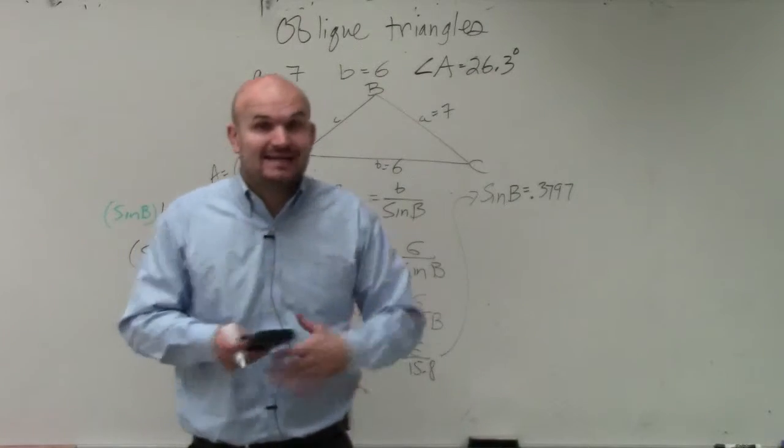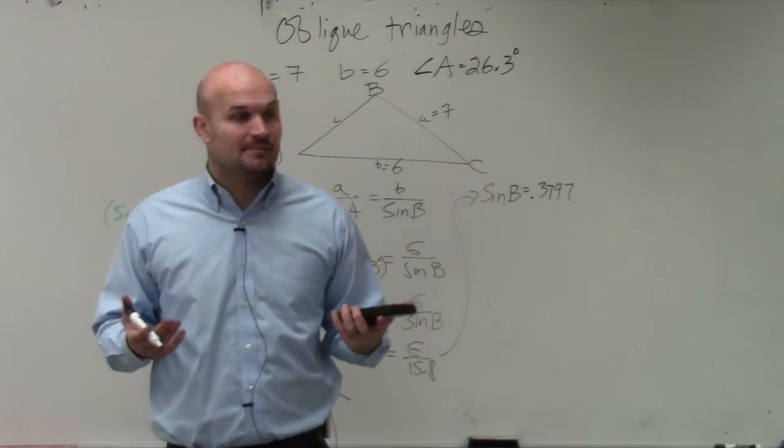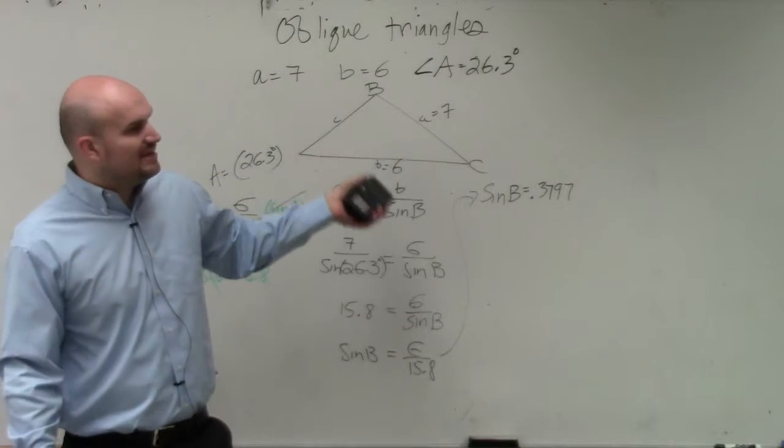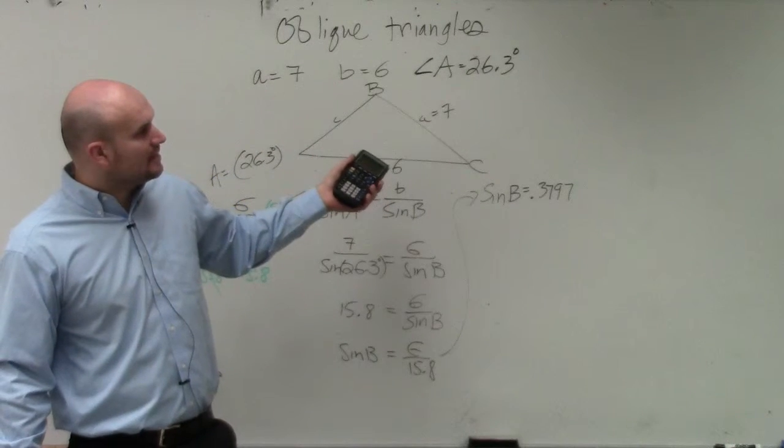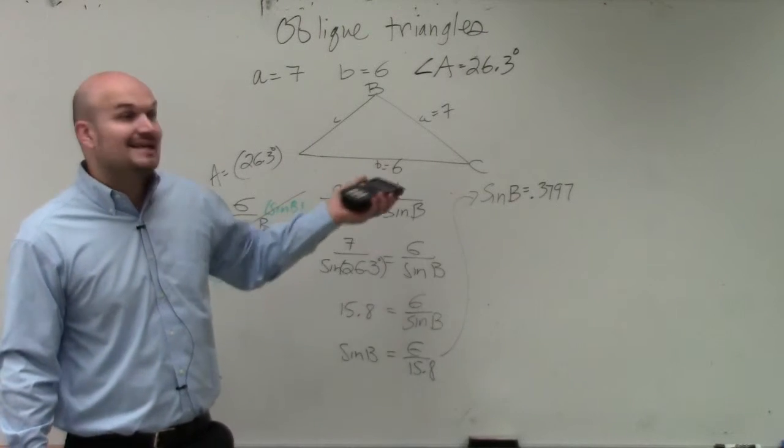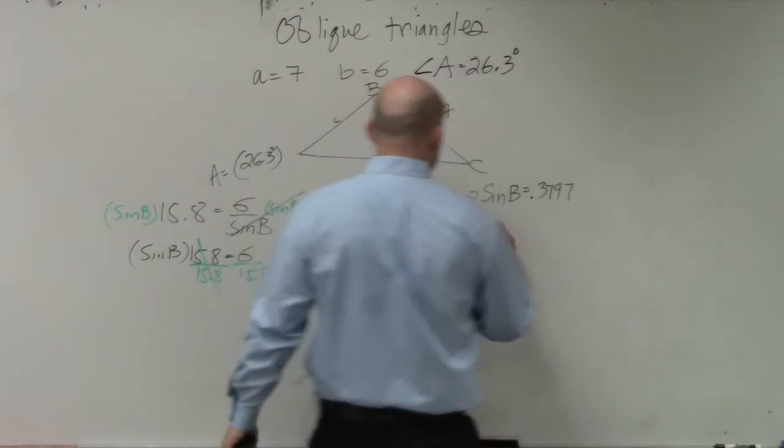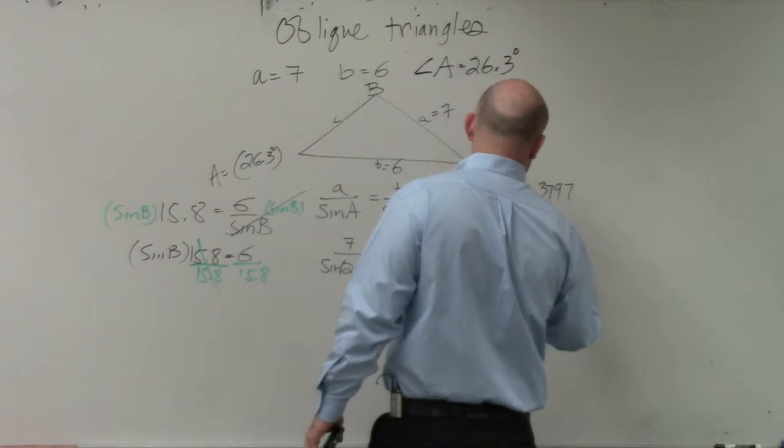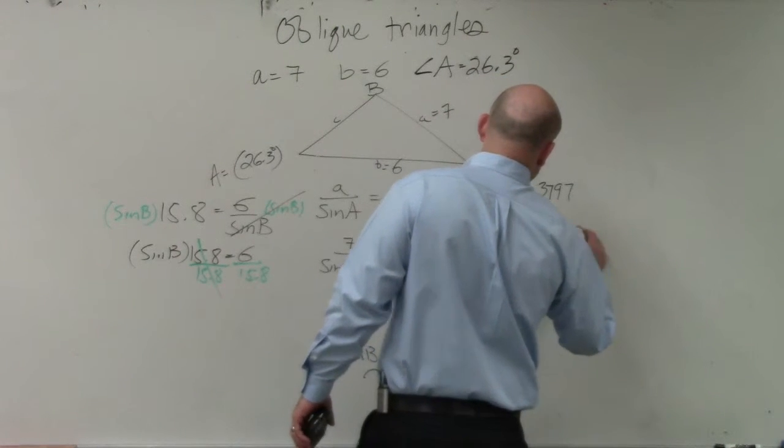So therefore, I need to make sure that when looking for the sine of B, I need to find the inverse. So therefore, I do sine inverse of 0.3797, and that's going to equal B.